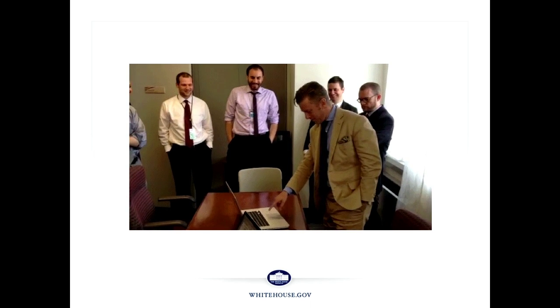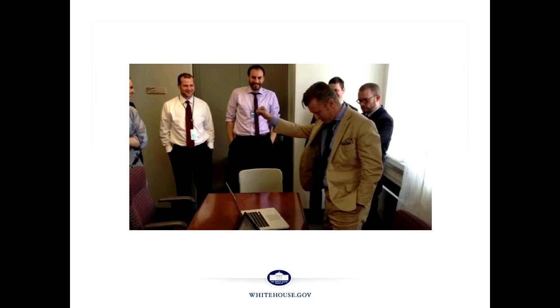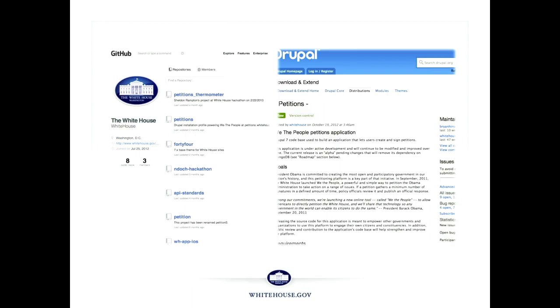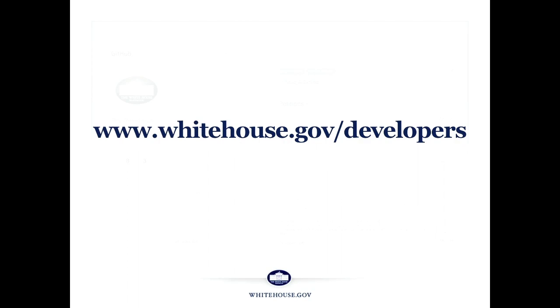We had our first pull request within six hours. We were the number one trending repo that week. Since then, we've gone gangbusters. We've now got eight public repos on GitHub. We've also got not just the petitions code on Drupal.org, but about half a dozen other Drupal modules that we've built ourselves, plus about nine or ten more that have been built by others that we're involved in developing. All of this is available at whitehouse.gov/developers, where you can see a listing and details on all of the open source projects we're working on.